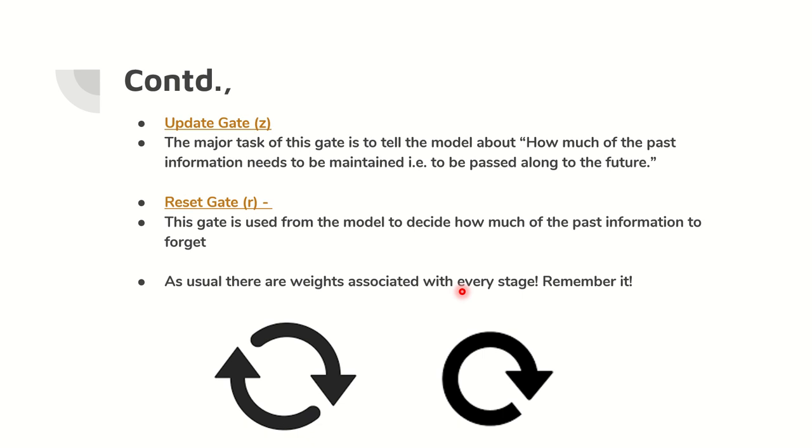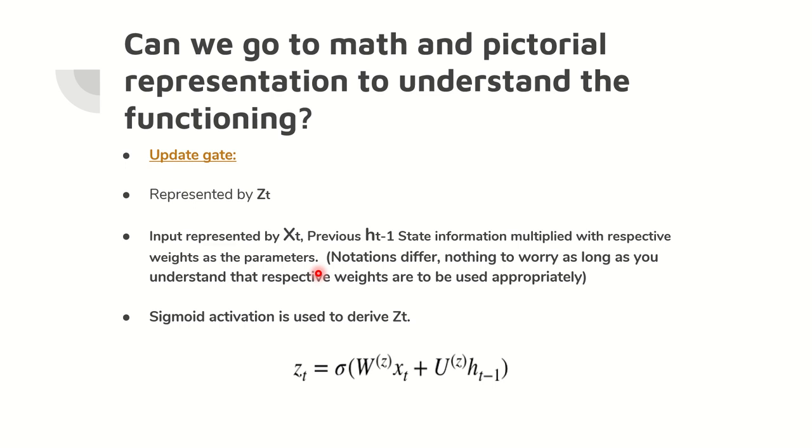What is reset gate? The reset gate is used for, it is fundamentally to decide how much of the past information to forget. It might look similar, but they are not. Reset gate is going to help you in understanding how much of the past information used to be forgotten. And the update gate is going to tell you how much of the information used to be sent along to the future. This is the major difference. And remember one point, whatever neural networks we are talking about, whatever models we are talking about, weights are always married to it. And we have got weights associated even with these gates. Now, we are going to understand mathematically as well as pictorially to see how exactly these gates work and what are all the steps in getting the complete implementation done.